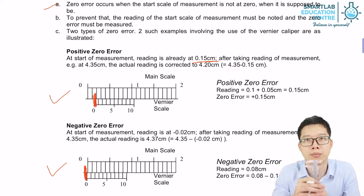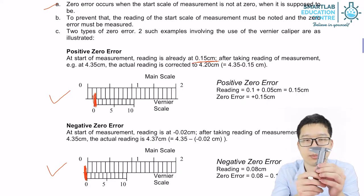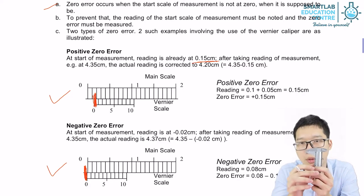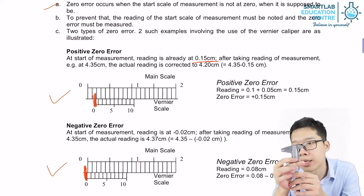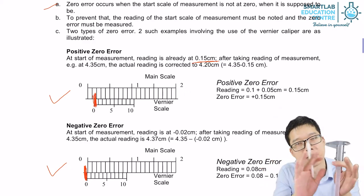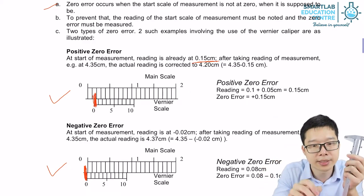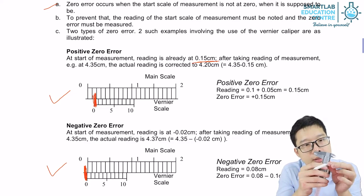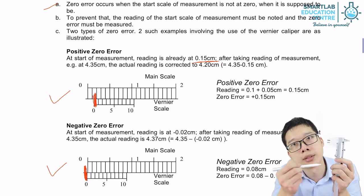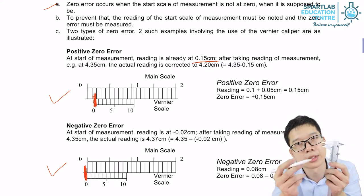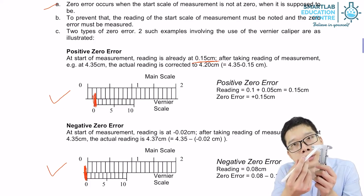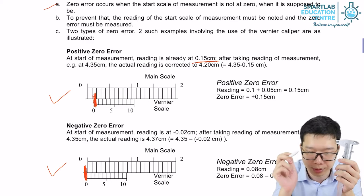So before using the vernier caliper, we must try to see whether there are zero error or not. How to see it? Close it up, and then if the zeros are aligned, no zero error. You are fine to use it. If the vernier caliper is inside the main scale, it has a positive zero error. If the vernier caliper scale is outside the range of main scale, it has a negative zero error.